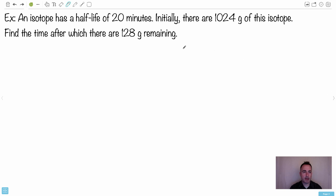Either way, let's talk about a real example here. We have an isotope. And we're given the fact that it has a half-life of 20 minutes. So now I know T1 half, right away, T1 half equals 20 minutes. Now, initially, there are 1,024 grams of this isotope. So that means initially now we start off with 1,024 grams. Find the time after which there are 128 grams remaining.